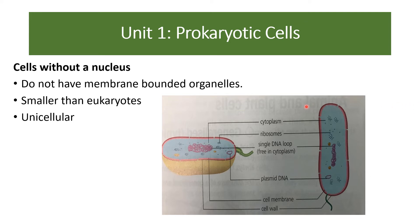Looking at prokaryotic organelles: they still have cytoplasm, so chemical reactions still occur there. They have ribosomes — smaller than in eukaryotic cells, but still used to make proteins. They have no nucleus but do have DNA free in the cytoplasm. They also have plasmid DNA, which you need for a later module — plasmids are used for antibiotic resistance in bacteria. They have a cell membrane controlling what enters and exits the cell, and a cell wall — though made of peptidoglycan (you don't need that name for GCSE) — which gives the cell a rigid shape and structure, just like in plant cells.